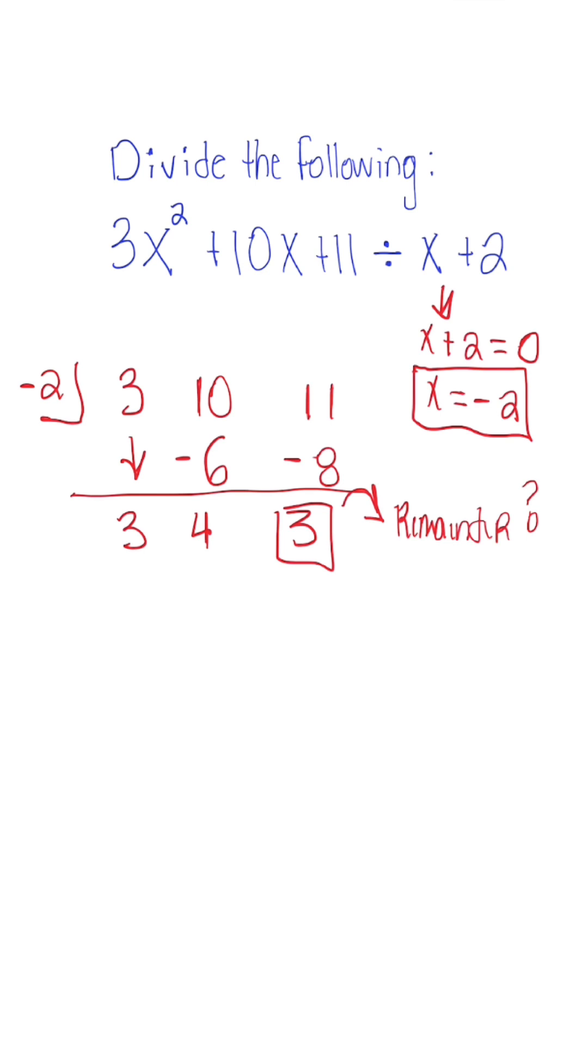And the answer that we're going to get once we divide is going to be three x plus four plus three divided by x plus two. This would be our final answer after dividing that trinomial expression.